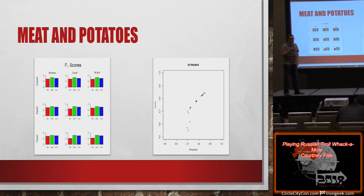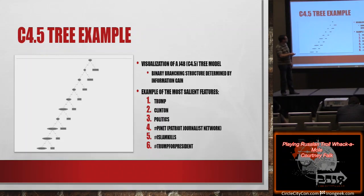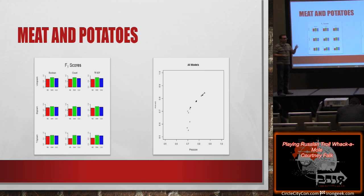We see that precision never really goes below 0.7, but recall seems to improve a little bit. Precision is how many of your flagged instances were actually true positives, and we'll see why that never really goes below 0.7 in a second.